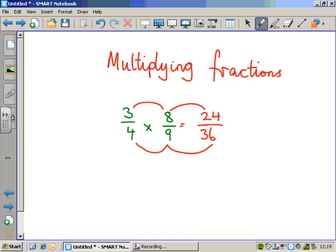However, we should always ask ourselves that key question. Can I simplify my answer? And in this case, you can, of course. 24 and 36, you should notice, are both even numbers. And you can certainly halve them to get 12 over 18.